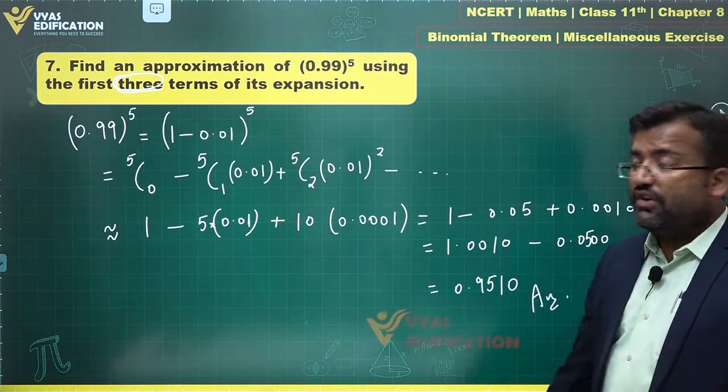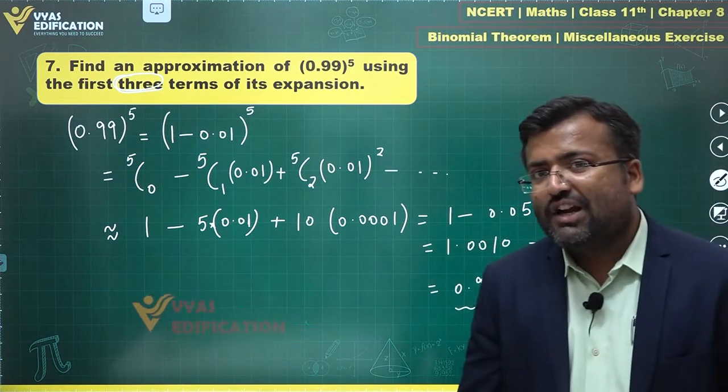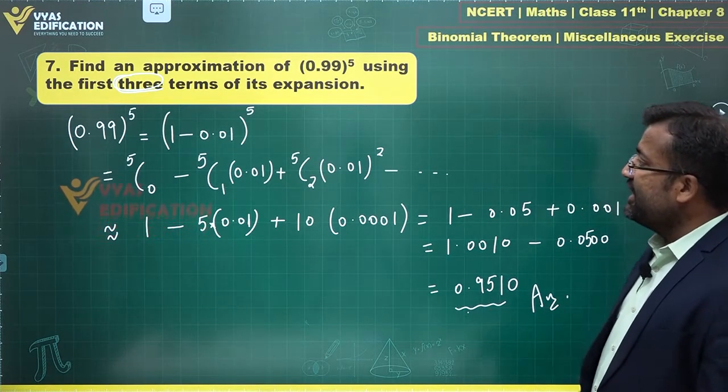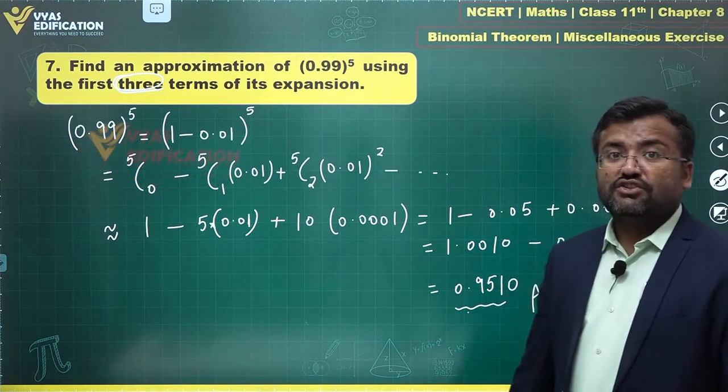0.9510 is the answer that I'm getting. 0.99 power 5 is approximately equal to this. And before you studied binomial theorem this was very difficult to estimate. Right now it's become very easy to estimate this expression. That's all in this question.